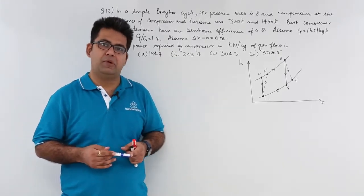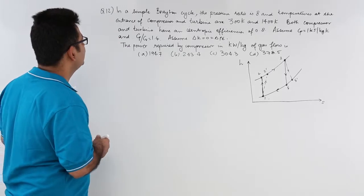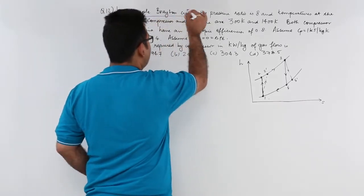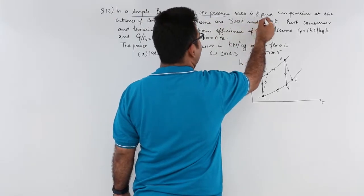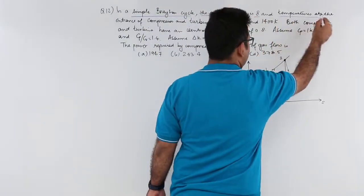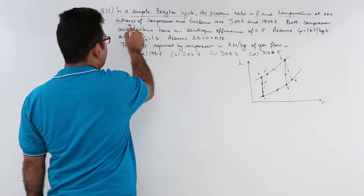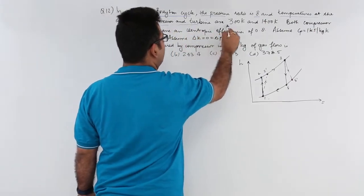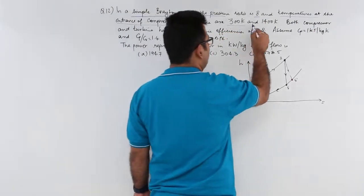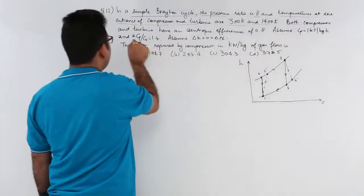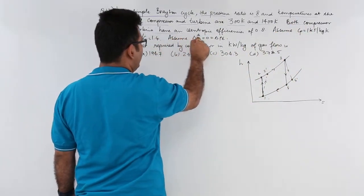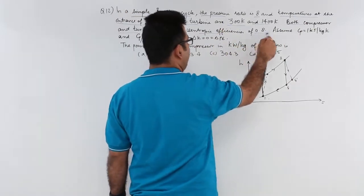Now let's come to question number 12. Question number 12 says in a simple Brayton cycle as shown in this diagram, the pressure ratio is 8 and the temperatures at the entrance of compressor and turbine are 300 Kelvin and 1400 Kelvin. Both compressor and turbine have an isentropic efficiencies of 0.8.